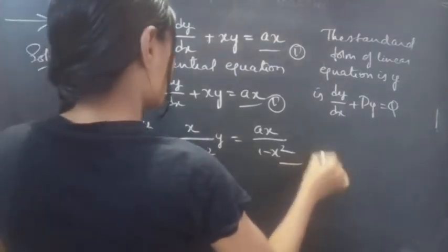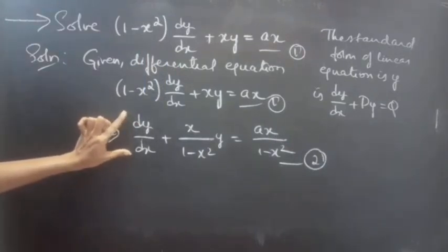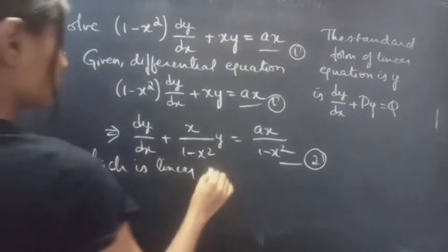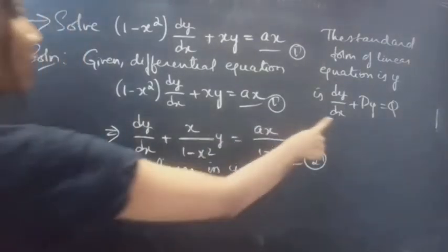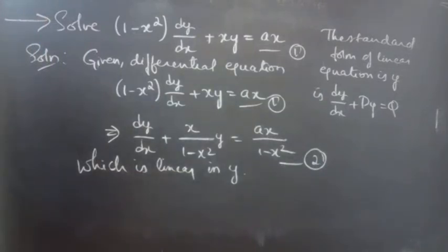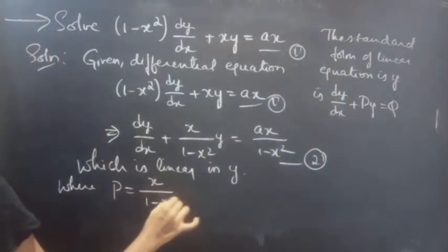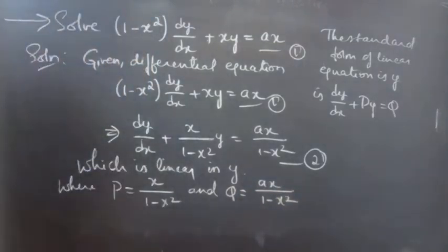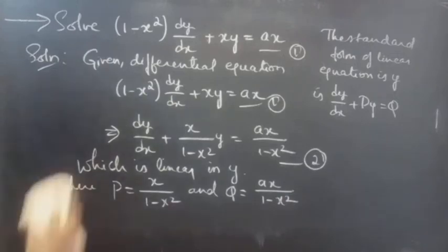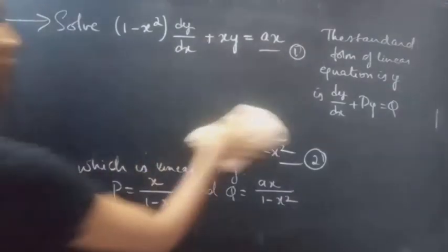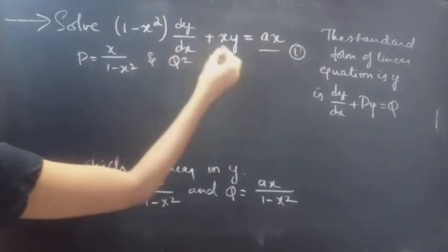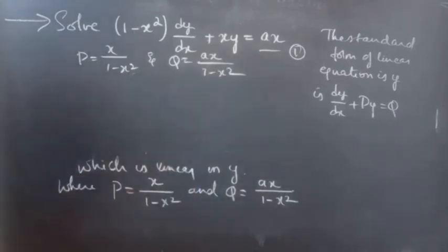Consider this as equation 2, which is linear in y. Now compare equation 2 with the standard form of the linear equation to find P and Q. By comparing, we get P equals to x/(1 minus x squared) and Q equals to ax/(1 minus x squared).